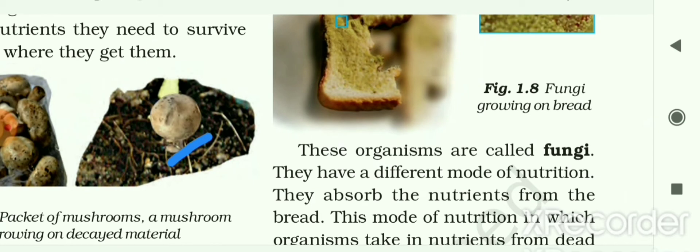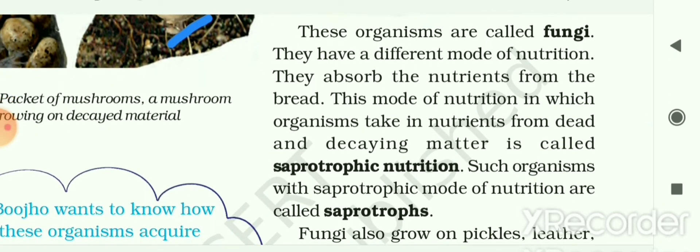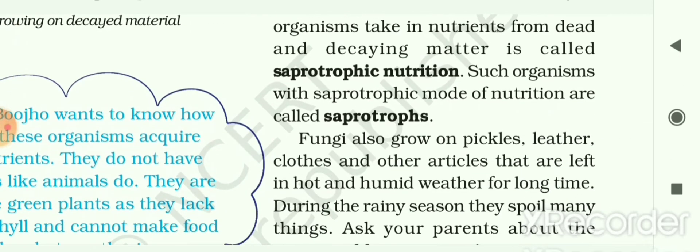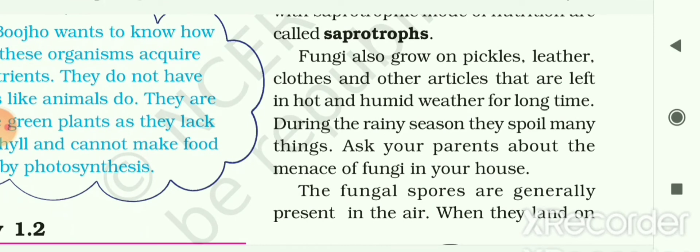These thread-like organisms are called fungi. They have a different mode of nutrition — they absorb nutrients from the bread. This mode of nutrition, in which organisms take nutrients from dead or decaying materials, is called saprotrophic nutrition. Such organisms with saprotrophic mode of nutrition are called saprotrophs. Mushrooms are saprotrophs. Fungi also grow on pickles, leather, clothes, and other articles left in hot and humid weather for a long time.